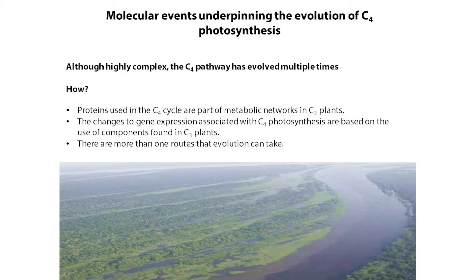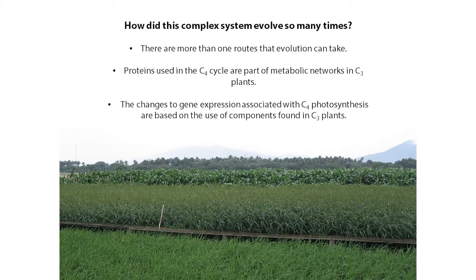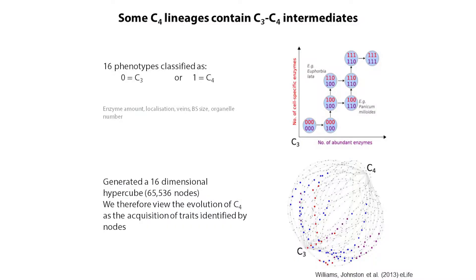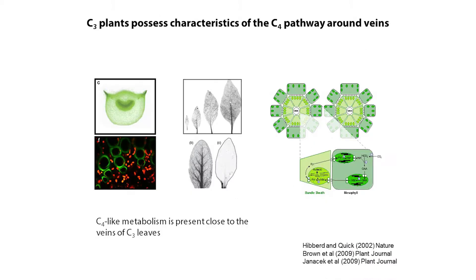Today I talked about the evolution of C4 photosynthesis. The C4 photosynthetic pathway has evolved multiple times in plants from the ancestral C3 state, and I discussed some hypotheses relating to how that has happened many times. Specifically, I discussed how proteins which are used in C4 photosynthesis are present in the C3 state and are already working together in the C3 state, so it's not such a leap for them to be working together in the C4 condition.